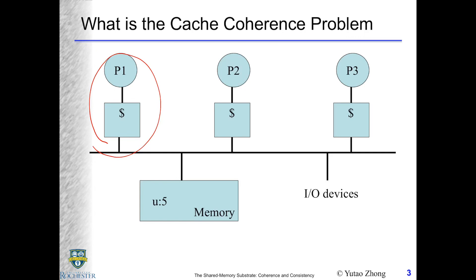What exactly is the cache coherence problem? A cache tries to buffer recently accessed memory locations so future accesses are faster without going to the bus and memory. Imagine a cache line holding variable u with a value of five. If one processor reads it — a cache miss — it fetches from memory and now has five in its cache. If another processor reads it, again no problem. But now there are two separate copies that can be manipulated by P1 and P3 independently.